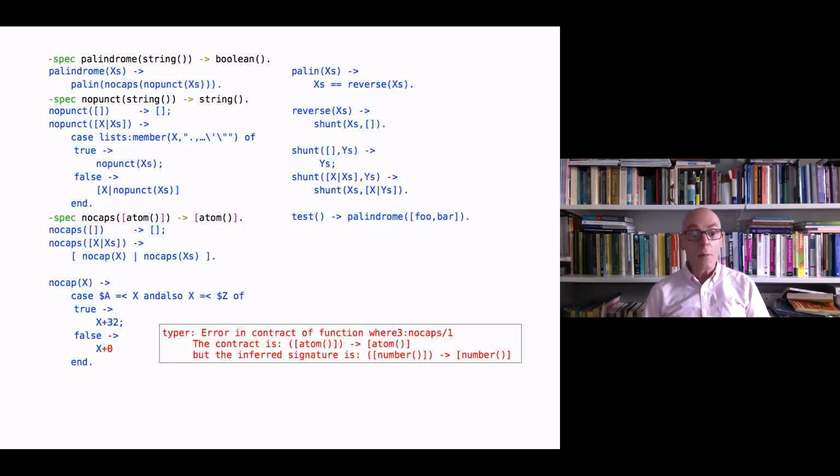We could explicitly say we wanted x to be a number. That would be perfectly reasonable too. Erlang allows you to do that. But it's not the case that Erlang is as strongly typed as a language like Haskell.